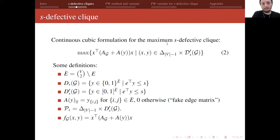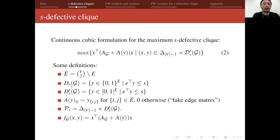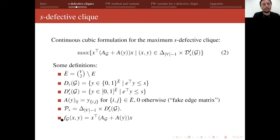The continuous cubic formulation is proposed in the Stochkov paper. Some useful definitions: Ē is the set of missing edges in the graph; D_s(G) is a cardinality constraint on the y variable; D_s'(G) is a relaxation of this constraint; A(Y) denotes the fake edge matrix; P_s is the feasible set of the formulation; and F(G) is the objective function. We maximize a cubic function that still uses the adjacency matrix of G plus the fake edge matrix A(Y), where feasible points (X, Y) belong to the Cartesian product of the probability simplex and the relaxed cardinality constraint.